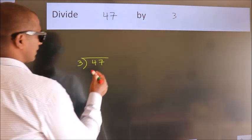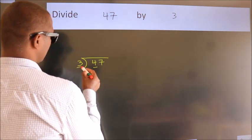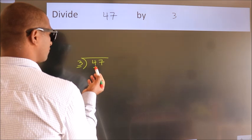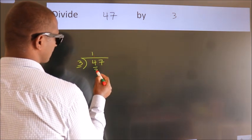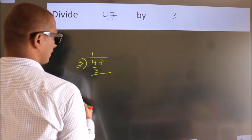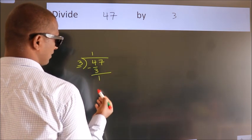Next, here we have 4, here 3. A number close to 4 in the 3 table is 3 ones 3. Now we should subtract. We get 1.